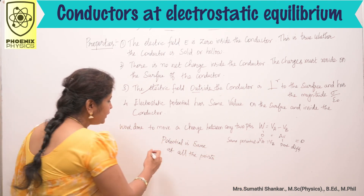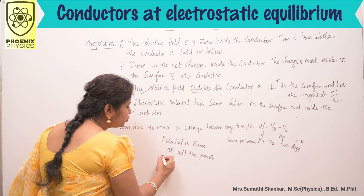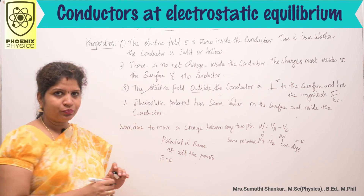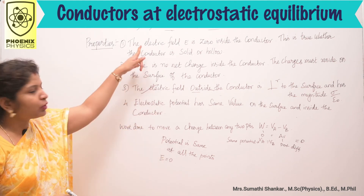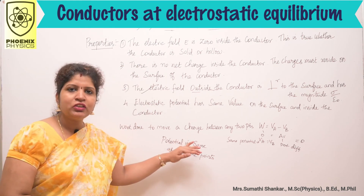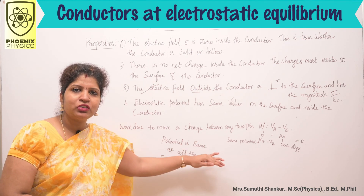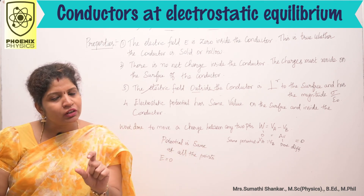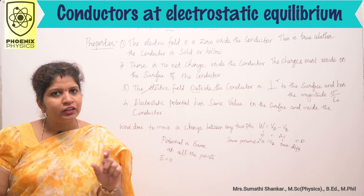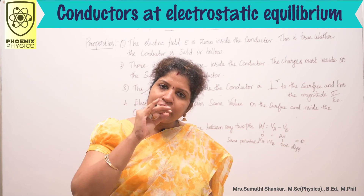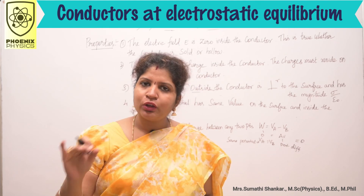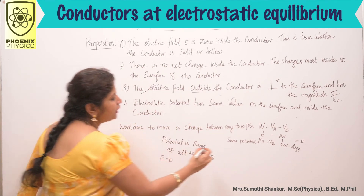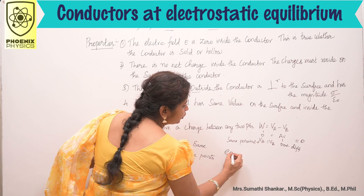We know that E = 0 inside the conductor — this is our first property. The potential is the same on the surface of the conductor. So our conclusion is: at electrostatic equilibrium, the conductor is at equipotential.